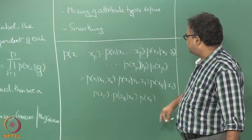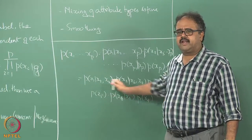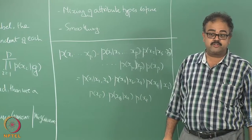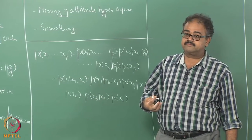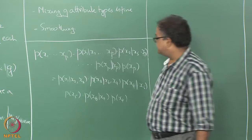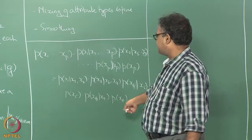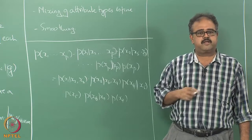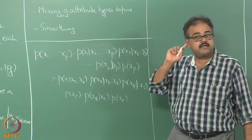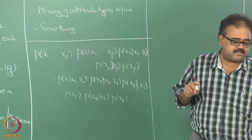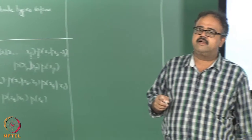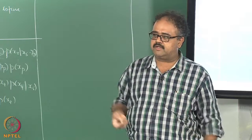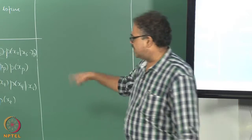One way of specifying this kind of conditional independence relation is to use a graph. What I will do in this case is have a graph with seven nodes — one node corresponding to each feature. More generally, these features are random variables. x1 is a random variable that takes values in whatever range x1 can take, and so on. These are all random variables.